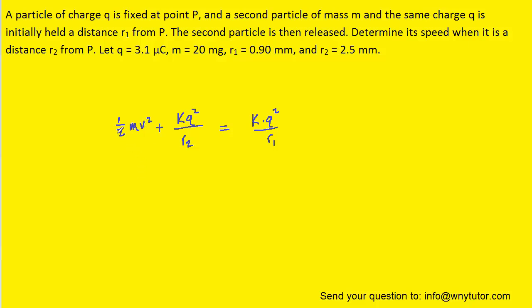And so the first thing we can do is multiply each of the three terms by two. We'll then subtract this term over to the right side of the equation. We could then divide each term by the mass M, and then finally take the square root of both sides.